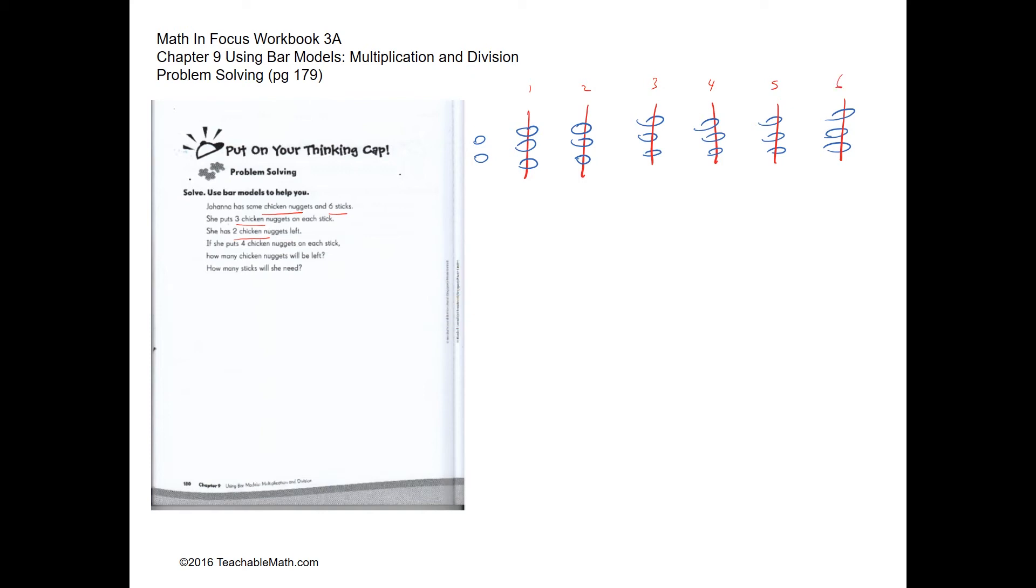So how many chicken nuggets do we have all together? We have six times three plus two, which is twenty chicken nuggets. So now she puts four chicken nuggets on each stick. How many chicken nuggets will be left?